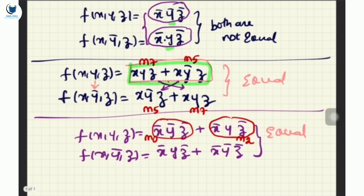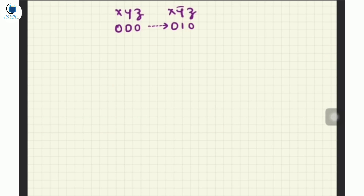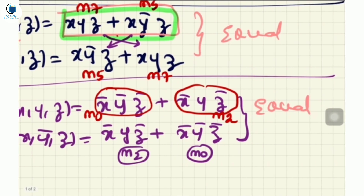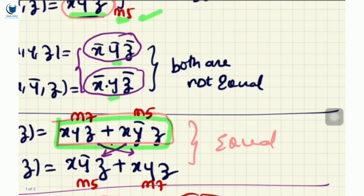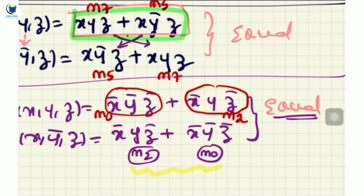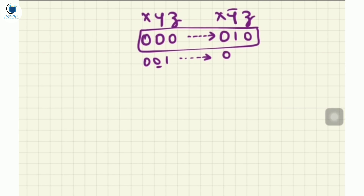Let me show you all the pairs now. Write x, y, z. If xyz = 000, replacing y gives 010 — so (m0, m2) is one pair. If xyz = 001, replacing y gives 011 — so (m1, m3) is another pair. These are the paired boxes.